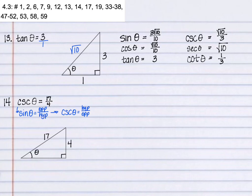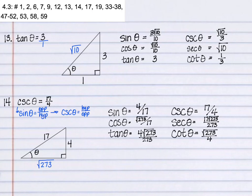For cosecant, remember that sine is opposite over hypotenuse, and cosecant is the reciprocal. So cosecant is the hypotenuse over the opposite. So we've got the first two sides. We find our third side and we write our trigonometric functions from that.